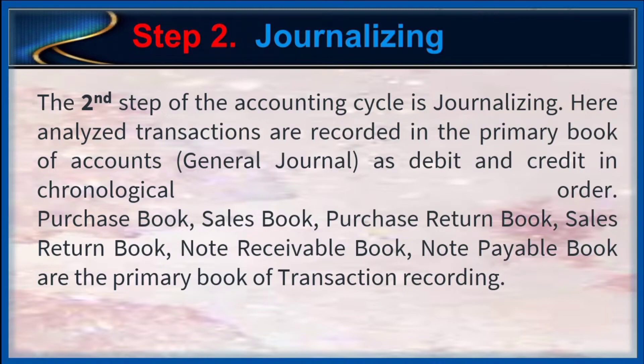Step 2: Journalizing. The second step of the accounting cycle is journalizing. Here, analyzed transactions are recorded in the primary book of accounts, which is called the general journal, as debit and credit in chronological order. Purchase book, sales book, purchase return book, sales return book, note receivable book, and note payable book are the primary books of transaction recordings.